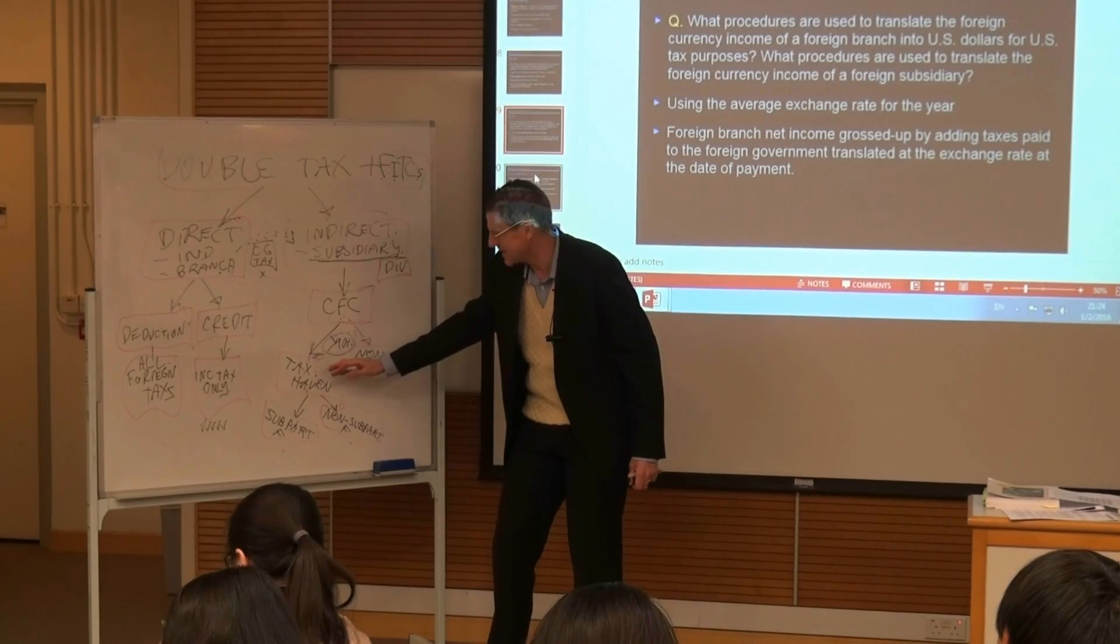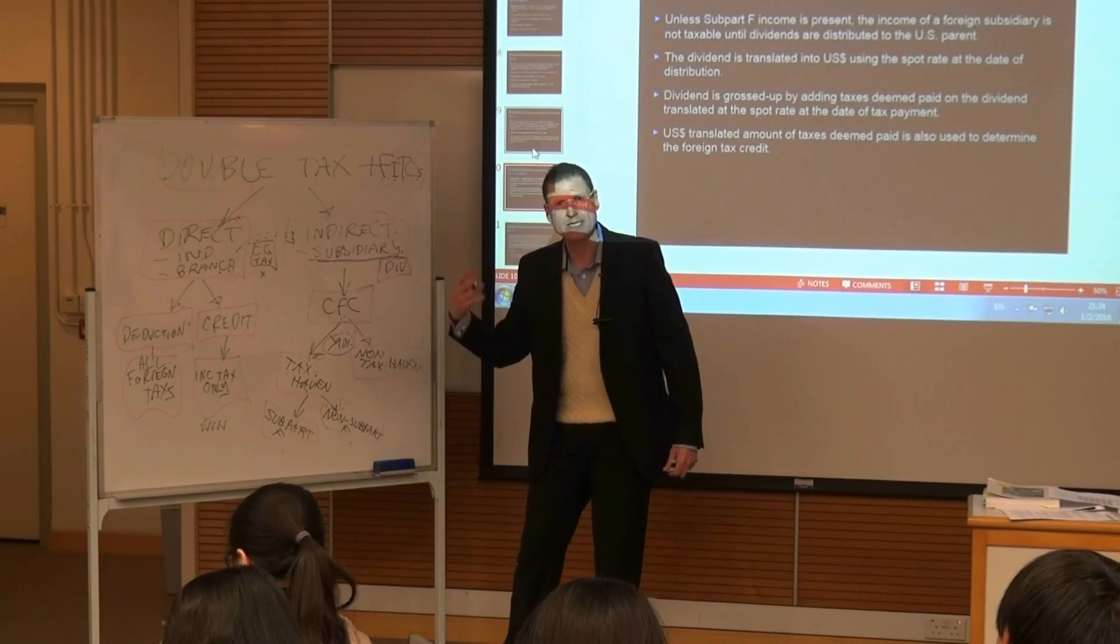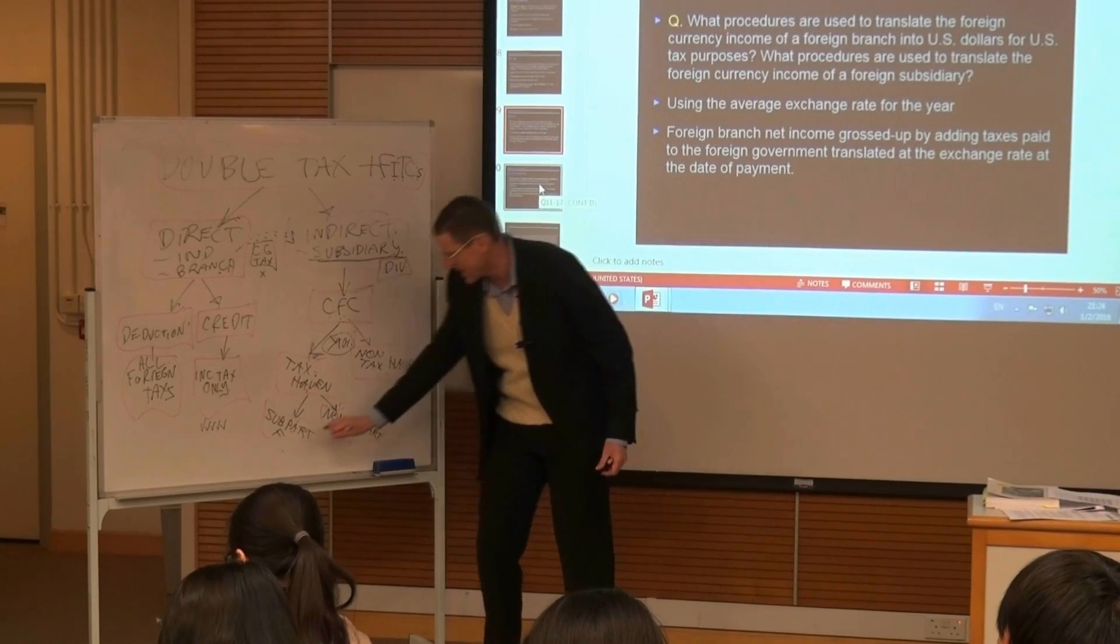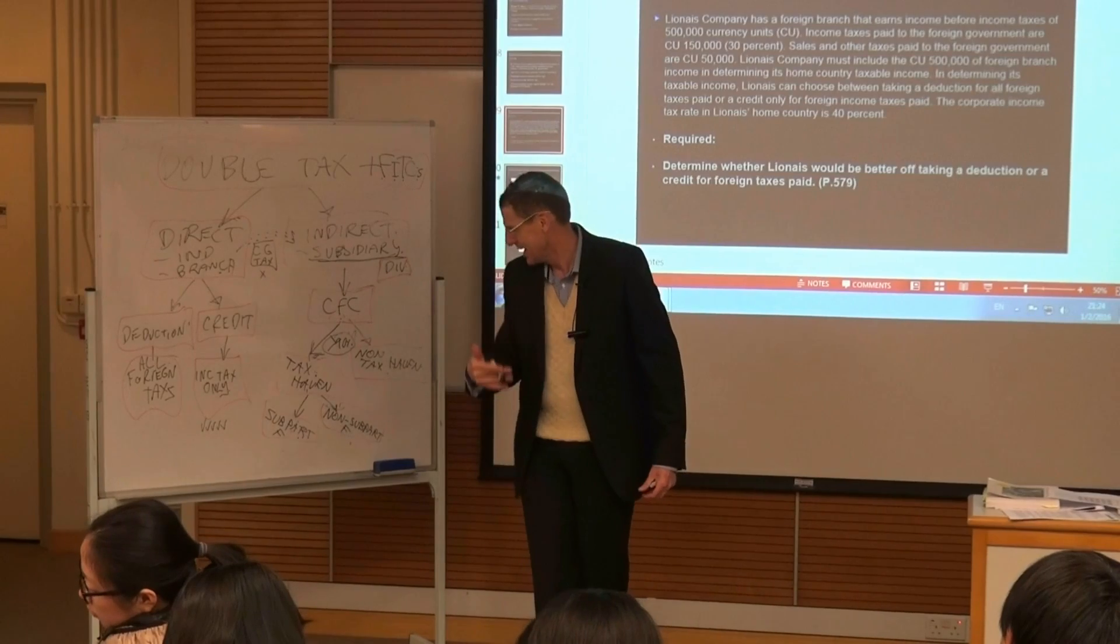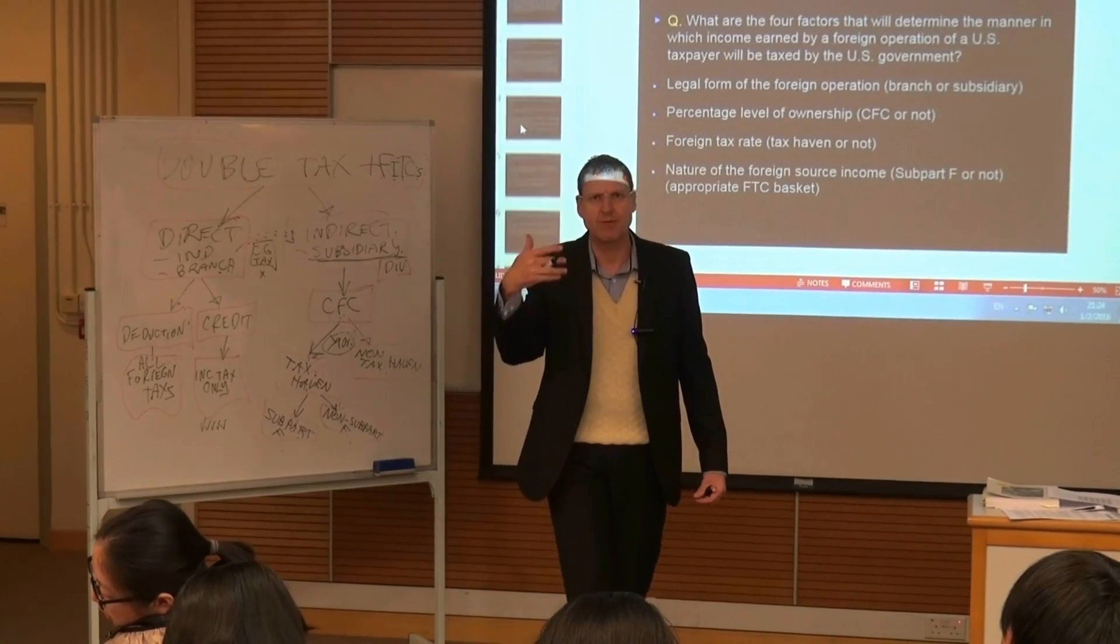Singapore turns out to be a tax haven. Then the second decision is, okay, is the money clean money or dirty money? What do we mean? Subpart F income.